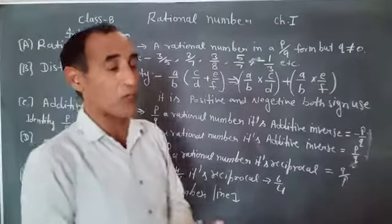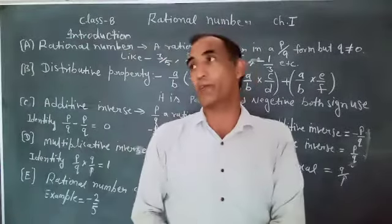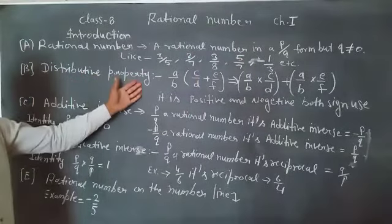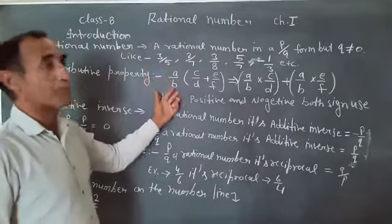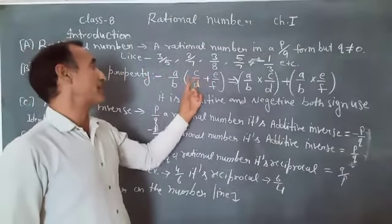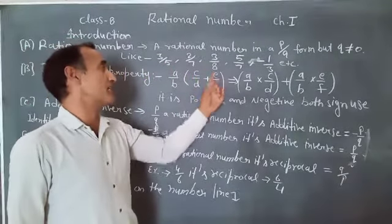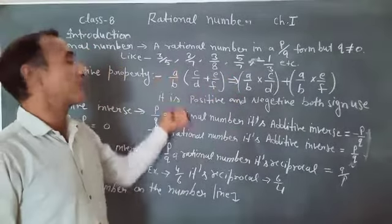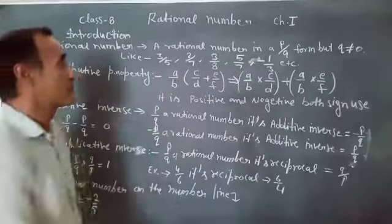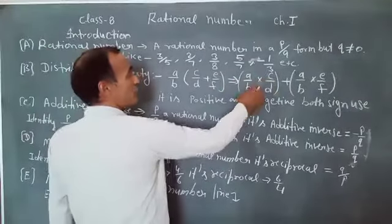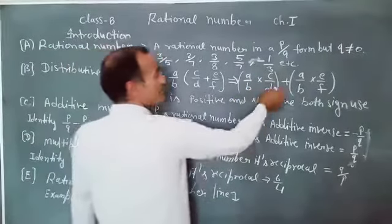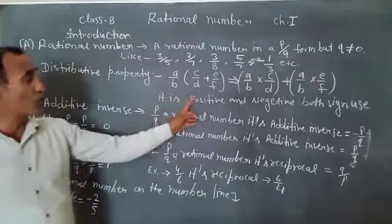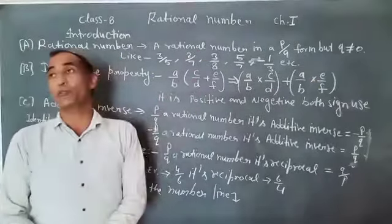After that, I am telling about the distributive property of Chapter 1. Distributive property like A upon B bracket C upon D plus E upon F. So we solve it: A upon B is a common digit. So A upon B into C upon D plus A upon B into E upon F. It is positive and negative both signs use.